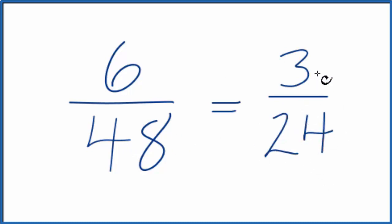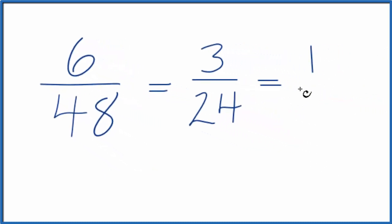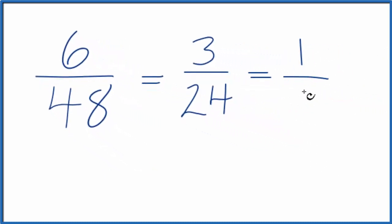That might be a bit easier because we know that three goes into twenty-four eight times. So we divide the top and bottom by three. Three divided by three is one. Twenty-four divided by three is eight. And that's what we got before.